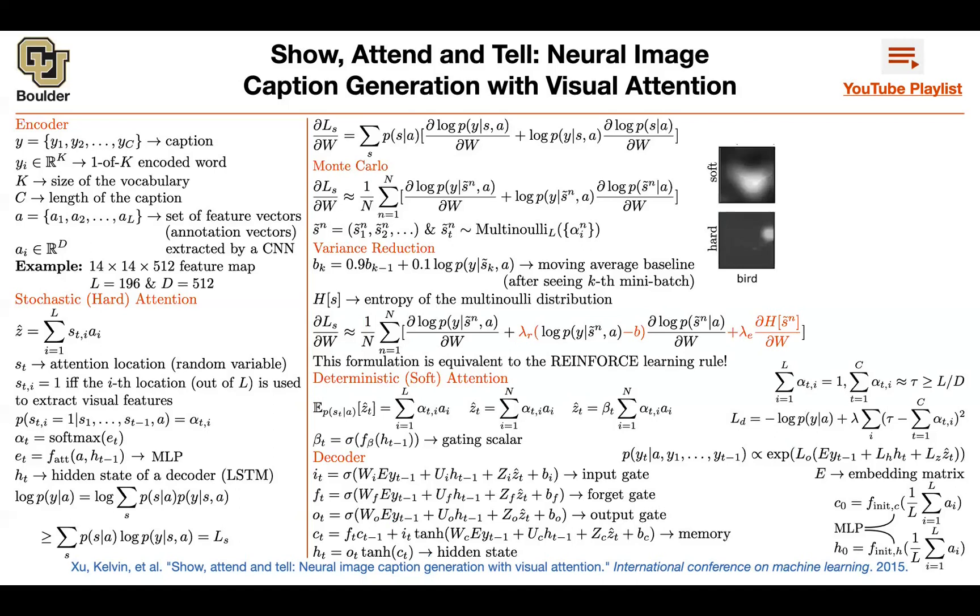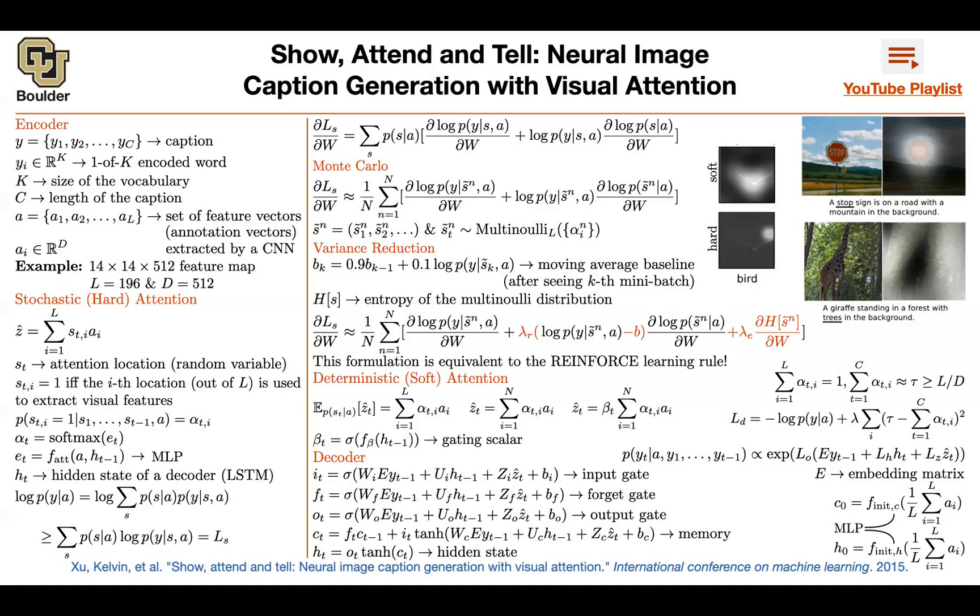But originally, attention was defined in a hard way, in a stochastic way. The idea was you have an image, you can push it through the CNN, stop at some depth of that CNN. Don't go fully to the vectorized version. Stop at some layer.